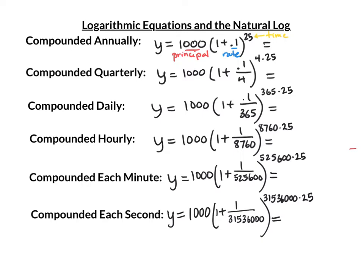If we compounded daily, we would take our rate and divide by 365, then to the power of 365 for one year; in 25 years, multiply by 25. Be careful to use parentheses when you plug that in. Hourly, divide by 8,760 — approximately that many hours in a year — to the power of 8,760 times 25.